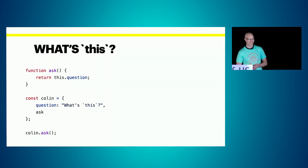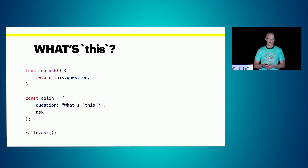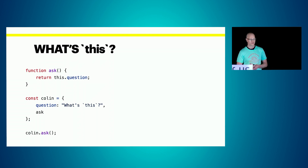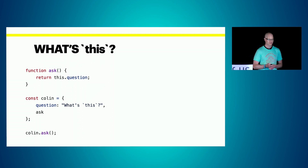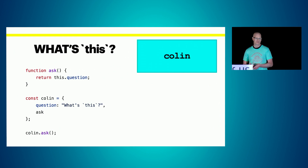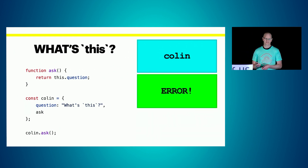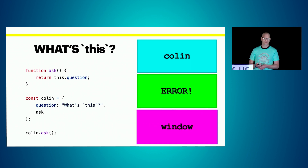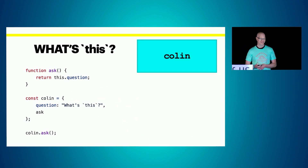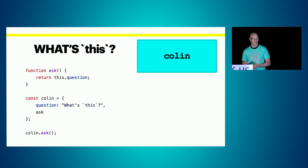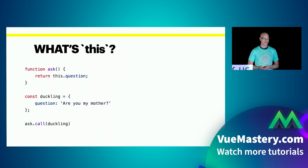Question number eight: we've got a function declared in global scope called 'ask' that returns 'this.question', and an object literal called 'Colin'. We add 'ask' to it as a property, then invoke that function on Colin as though it was a method. What's 'this'? Is it Colin, is it error, or is it window? If you answered Colin, you're right. Whenever invoking a function as a method, just look to the left of the dot — that's what 'this' is going to be.